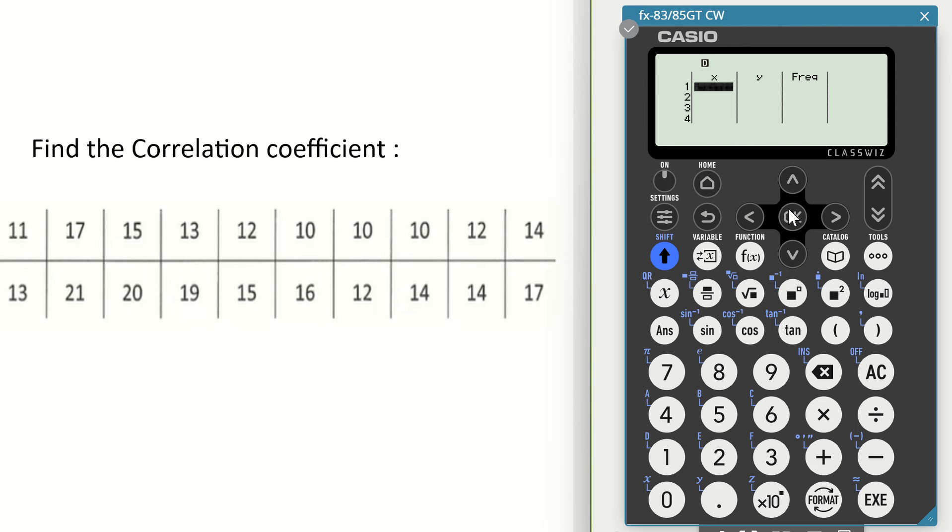We now have three columns: X, Y, and frequency. As I look at the table of data, everything from the top is going to go into the X column.